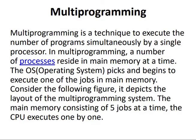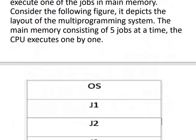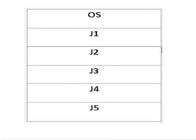Next comes multiprogramming. Multiprogramming is a technique to execute a number of jobs simultaneously by a single processor. In multiprogramming, a number of processes reside in main memory at a time. The operating system picks and begins to execute one of the jobs in main memory. Main memory holds multiple jobs — Job1, Job2, Job3, Job4, Job5.